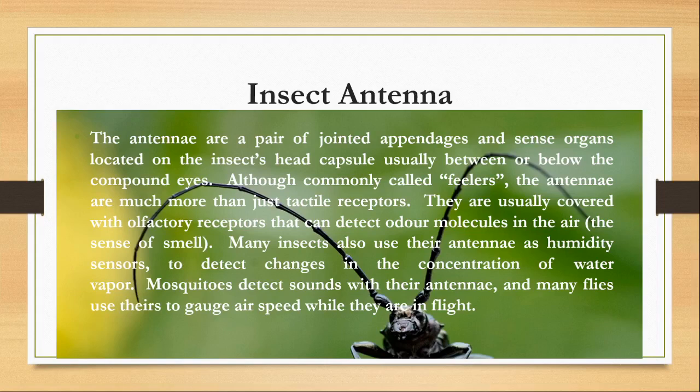Hello and welcome to my class. In this video I am going to talk about insect antennae. So let's start with what is an insect's antenna. The antennae are a pair of mobile jointed appendages which also serve as sense organs, and they are located on the insect's head capsule, usually between or below the compound eyes.